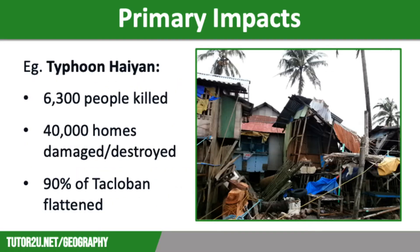In tropical storms you have damage to and destruction of buildings. However, tropical storms often bring huge storm surges with them, so you have loss of life through drowning, which causes 90% of deaths in tropical storms. Power lines are often blown down and crops can be washed away.